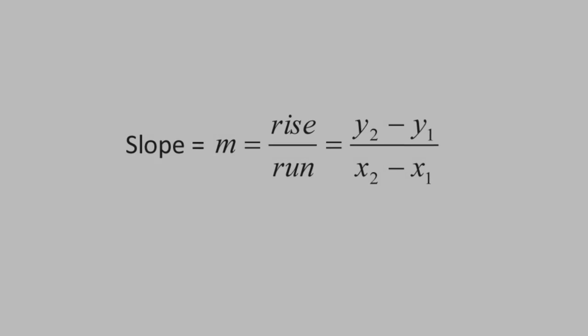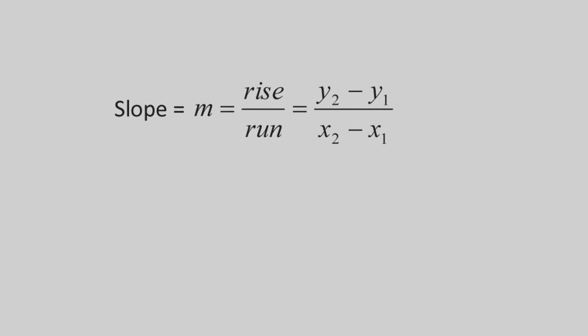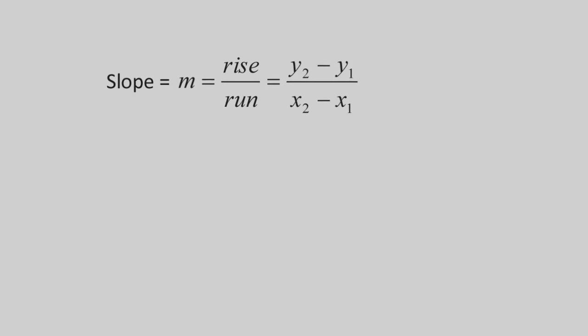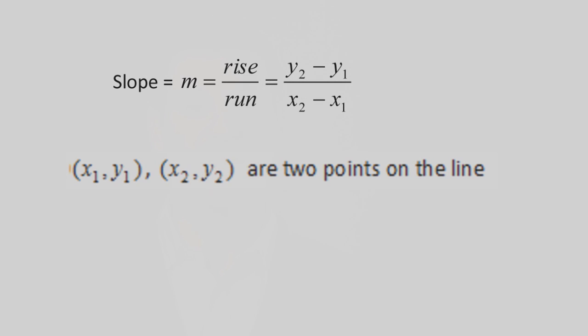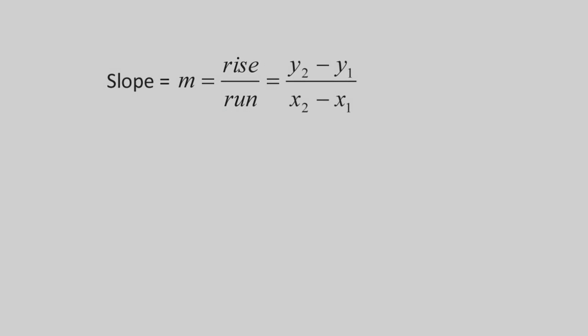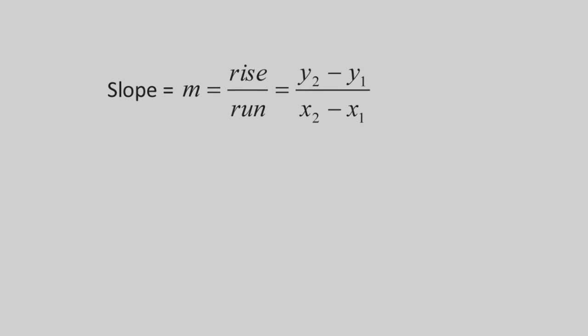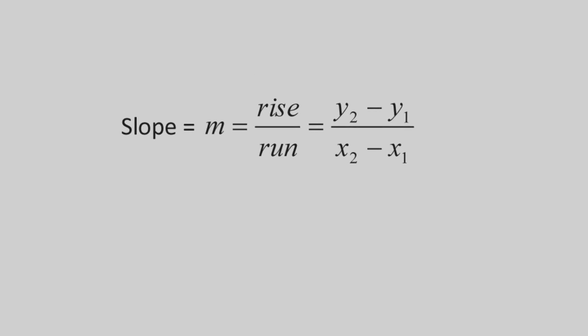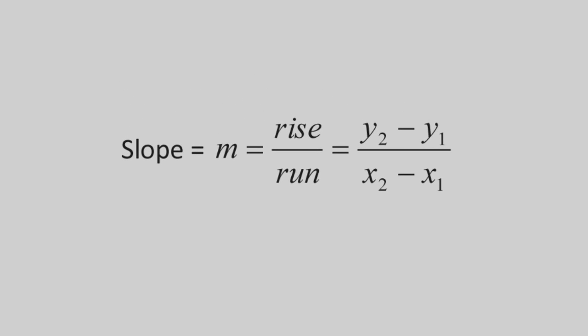Next, you should know the following formula to compute the slope of a line when you are given two points. Here, x1, y1 and x2, y2 are any two points on the line, and m stands for slope. The slope is y2 minus y1 over x2 minus x1. Note that the y coordinates are subtracted first in the numerator — a common error is to subtract the x coordinates first.